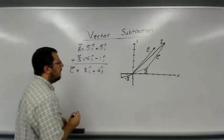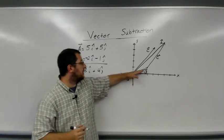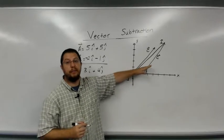So 2 in the negative x direction and 1 in the negative y direction. So this vector represents negative b. And notice that negative b is exactly 180 degrees from b.